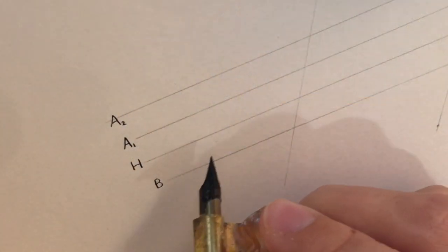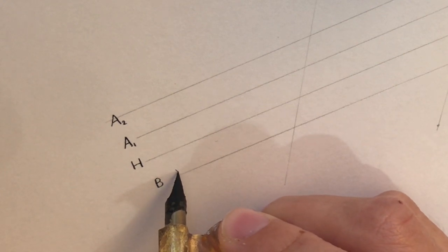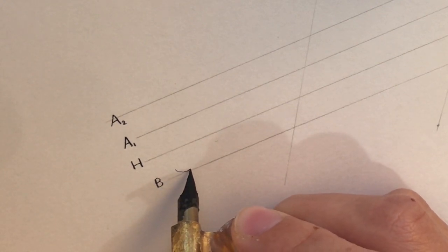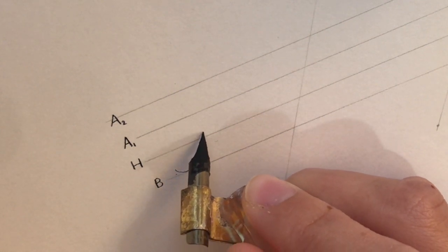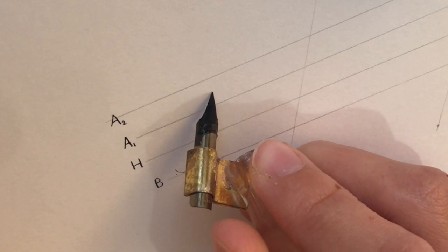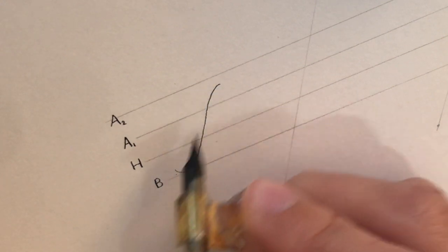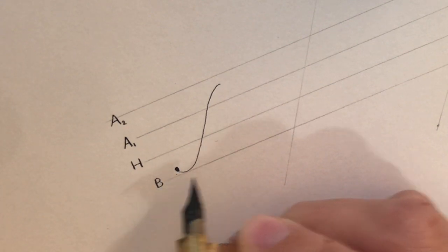Let's get into it. The first N we will do is just a basic N. It starts with a hairline upstroke starting at the baseline, going up almost to the second ascender line. Then lift your pen and add the terminal dot right above the baseline. Add a little pressure to fill it in.